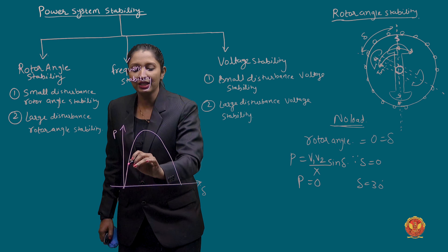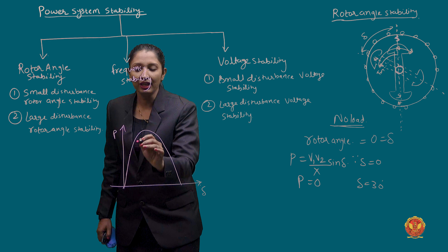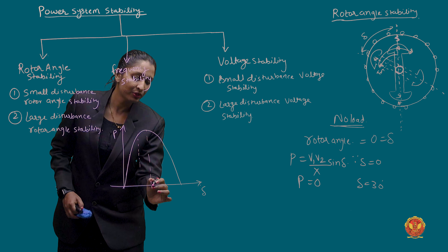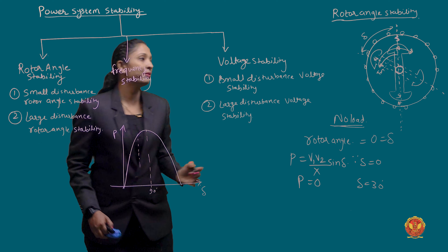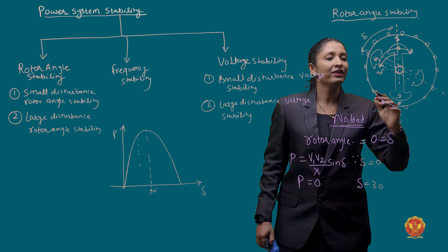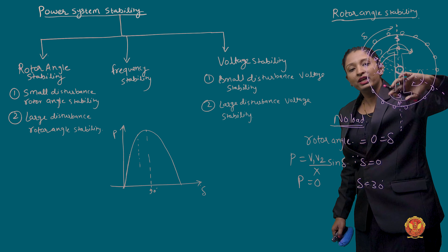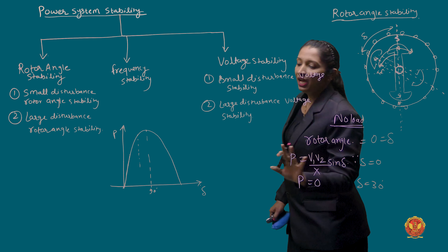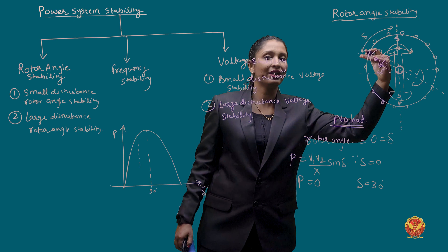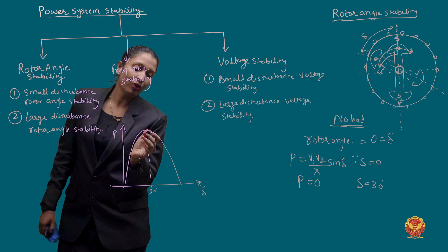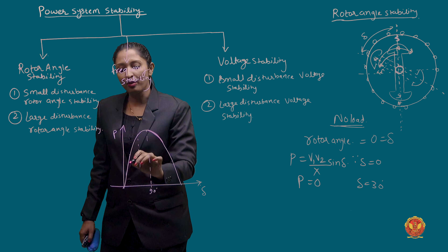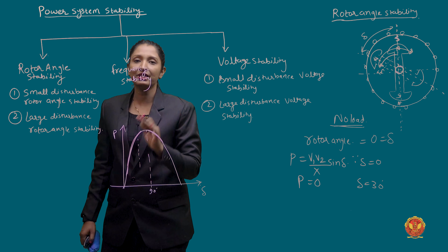As we increase delta, our power also increases. Usually, we operate the system with delta equal to 90 degrees maximum. Why? Because the alignment of the rotor will be at 90 degrees. If it goes beyond 90 degrees, here the north pole meets north pole and they will repel. This means you have to operate below 90 degrees. If delta is more than 90 degrees, you enter the unstable operating zone. In normal power system operation, delta should be less than 90 degrees.